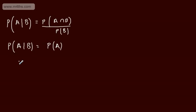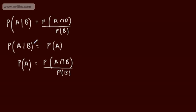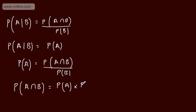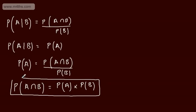So making the substitution, we can write that the probability of A is equal to the probability of A intersection B divided by the probability of B. Therefore, we can state our multiplication rule for independent events: the probability of A intersection B is equal to the probability of A multiplied by the probability of B. And that's the rule that we need to use.